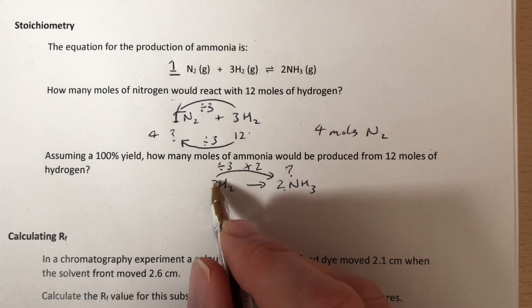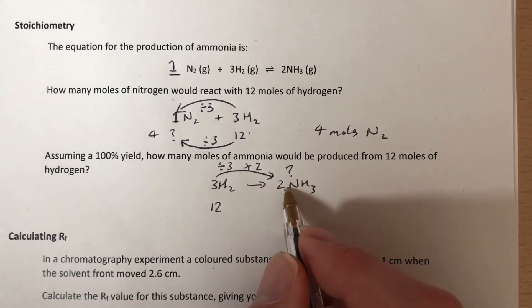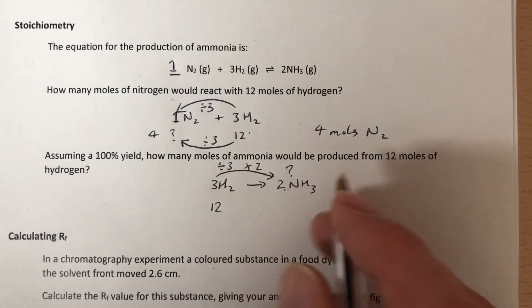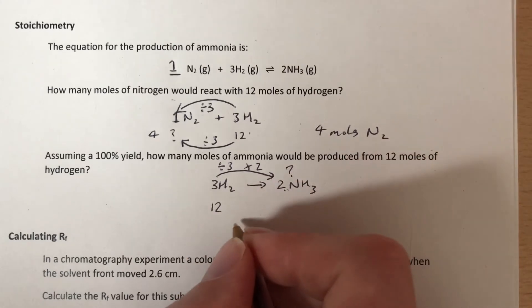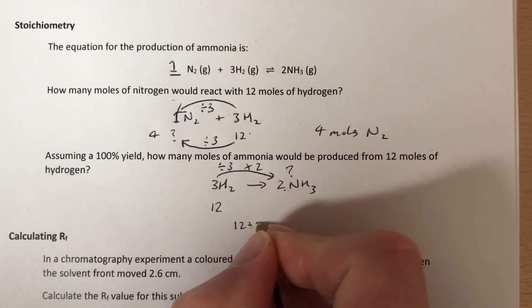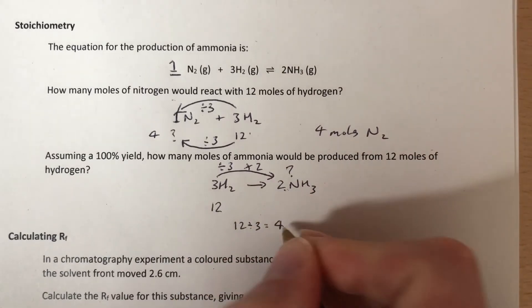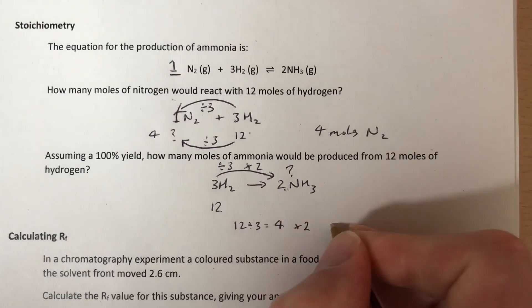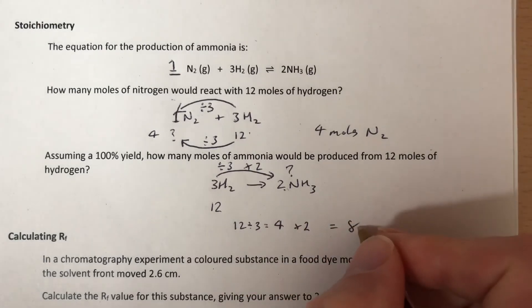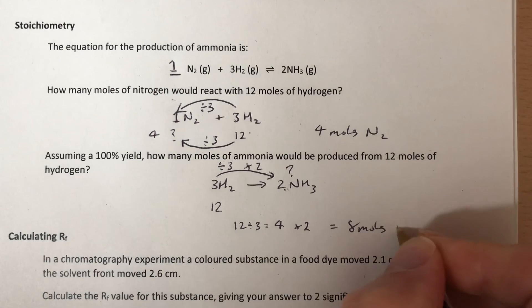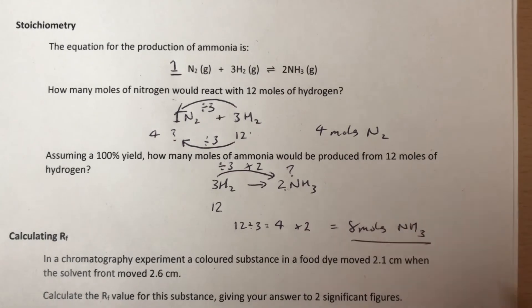If we take three and we divide by three we get one, but we've got two over here so we need to multiply by two as well. So let's do that. 12 divided by 3 equals 4 multiplied by 2 equals 8. 8 moles of ammonia. There is our answer.